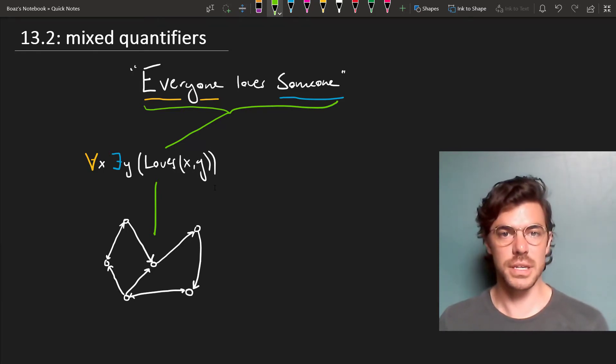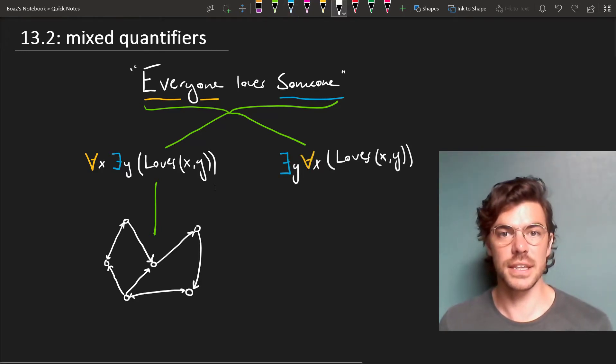But the other reading is quite different. It takes the everyone to be within the scope of the someone and it's somewhat less natural, but it's still available. So what this says is that there's some special someone that everyone loves. This won't come true on the left hand model.